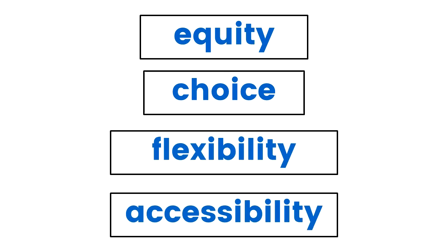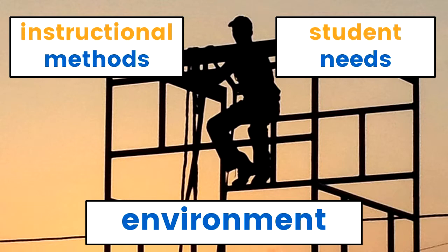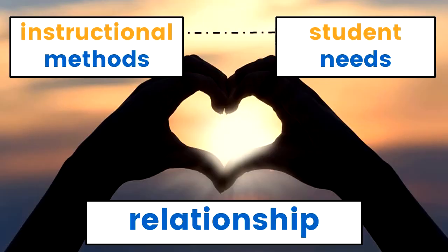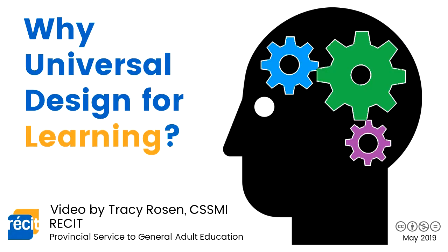As an educator, the importance of our work lies in creating that environment where our instructional methods and student needs are balanced with subject matter requirements. When we do that effectively, that's where the magic of relationship lies. Universal Design for Learning is a framework that can help to ensure our relationship is based in learning and opening access to that learning for all of our students.